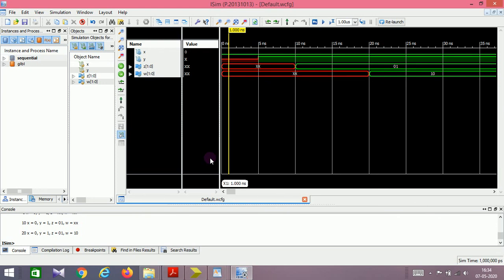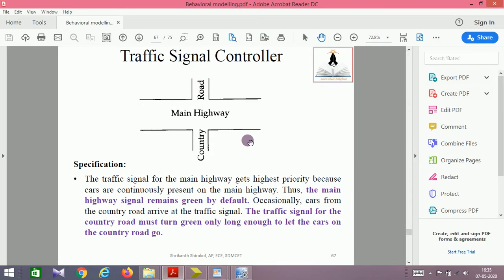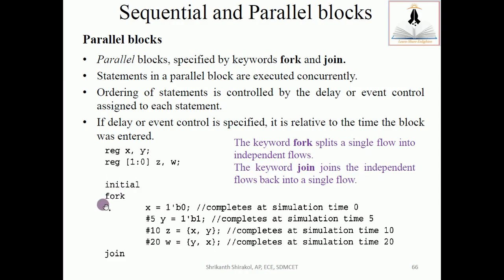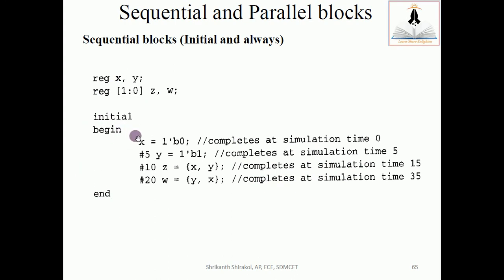Nested blocks, wherein you can use begin end and fork and join together, just explore it. Take it as an assignment. And one more is there is a named and disable block. You can name any block. If you have an initial block and you are beginning it, you can give some name to this, so that becomes a named block. And if you want to disable it, you have a keyword disable and name that block, so that gets the block disabled. These are simple additional features.